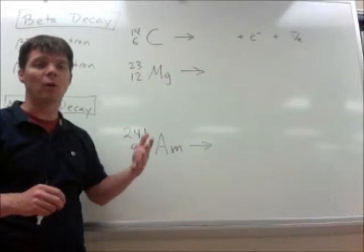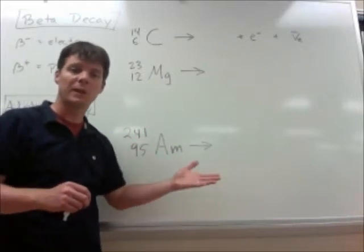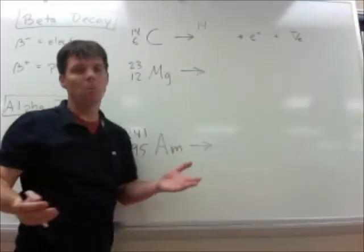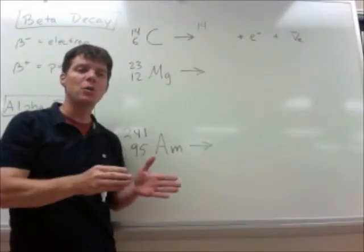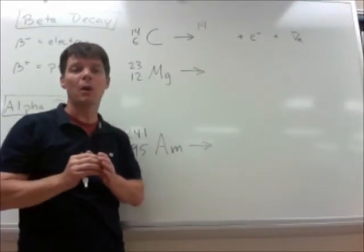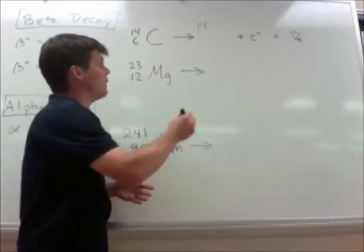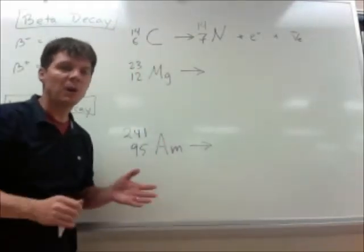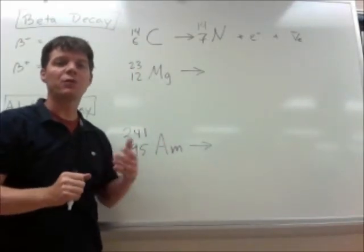Now, this isn't really going to change the mass. The overall mass of this particle that's being produced is still 14, but because we have had a neutron become converted into a proton, the atomic number is now going to be seven. So this process is going to produce nitrogen-14.